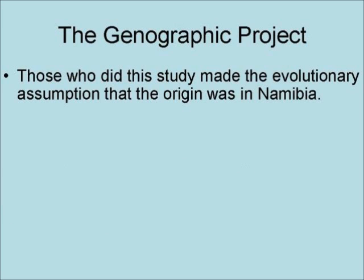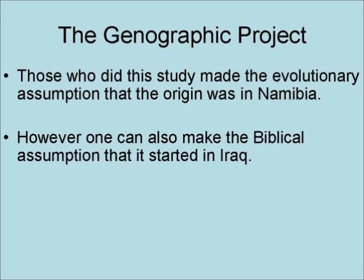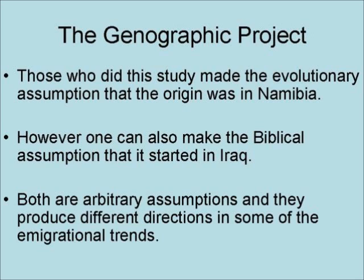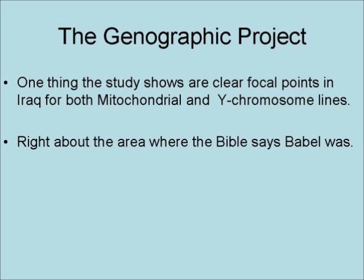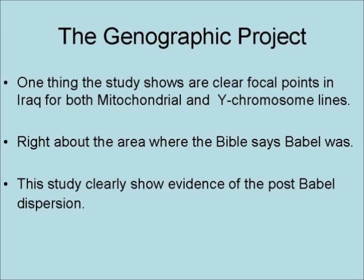Those who did this study made the evolutionary assumption that the origin was in Namibia. However, one can also make the biblical assumption that it started in Iraq. Both are arbitrary assumptions and they produce different directions for some of the migrational trends. One thing the study shows are clear focal points in Iraq with both mitochondrial and Y-chromosome lines, right about the area where the Bible says Babel was. As a result, this study clearly shows evidence of the post-Babel dispersion.